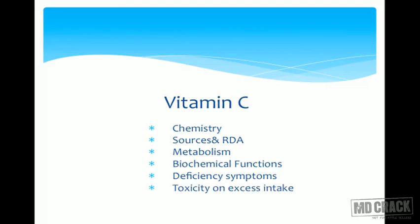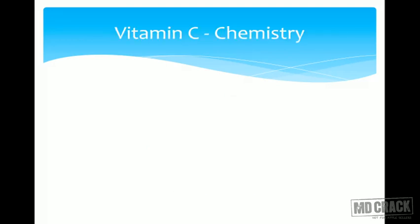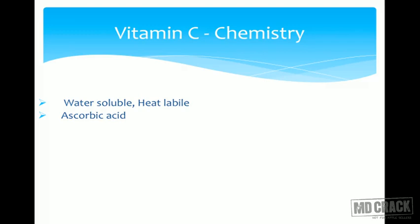What is the chemistry of vitamin C? It cannot be synthesized within the body. It is closely related to the hexoses — in primates and other lower organisms, it is synthesized from glucose. In humans, this is not possible. Vitamin C is water-soluble and heat-labile, and is known as ascorbic acid.